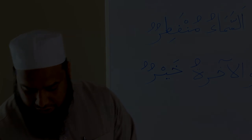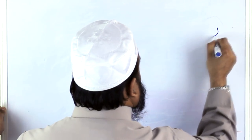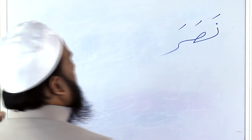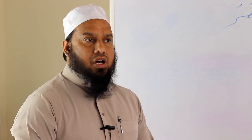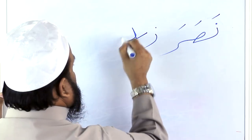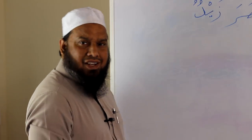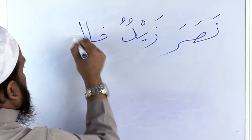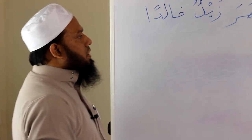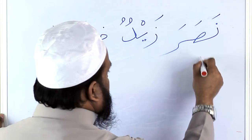Now we move on to Jumla Fi'liya — the verbal sentence — a sentence that starts with a verb. Let's start with Nasara. Nasara is the past tense and means 'he helped' — one man helped. Al-Nasru min Allah — we've heard this before. I'm going to use Zaid again because he's very popular. When you were studying English, they used Fred a lot; in Arabic, they use Zaid. Nasara Zaidun Khalidan — this is a verbal sentence. Nasara is the verb, also called Al-Fi'l.